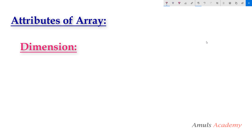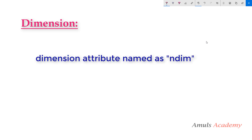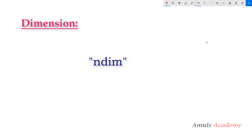First we will discuss about dimensions. We can create n-dimensional arrays using numpy libraries, where n is the number of dimensions. We can create one-dimensional, two-dimensional, three-dimensional arrays and so on. If I want to find out the dimension of an array, I can use the ndim attribute, which stands for number of dimensions.